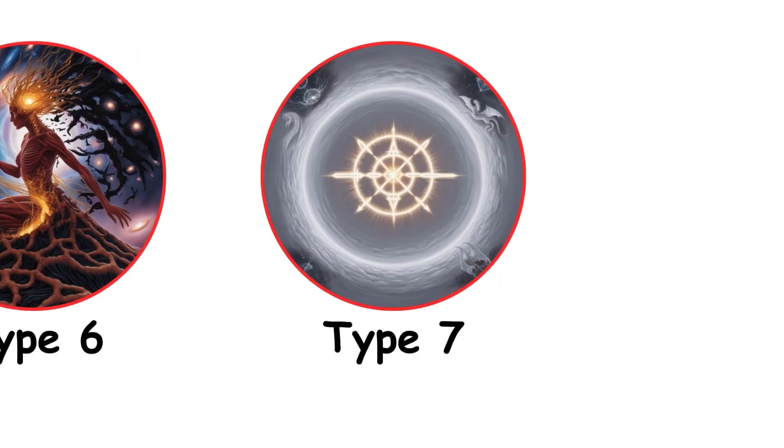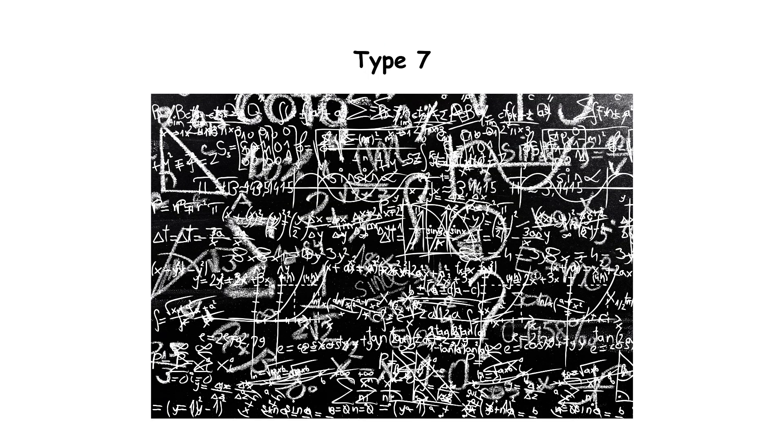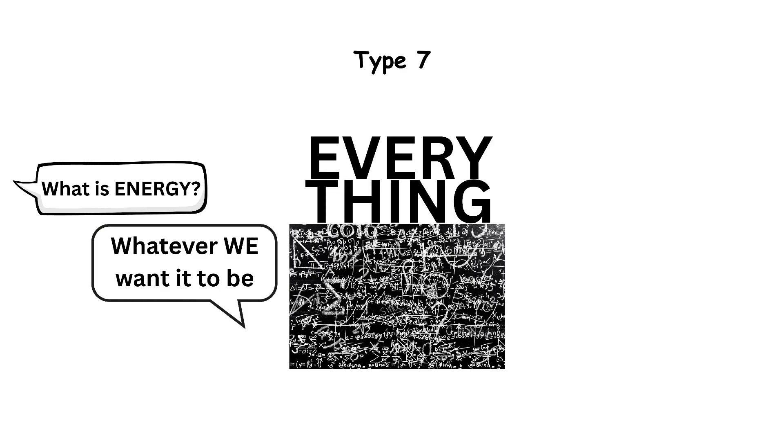A Type 7 civilization is beyond comprehension. They don't use energy. They define it. They don't create universes. They are the foundation of existence. They have conquered everything.